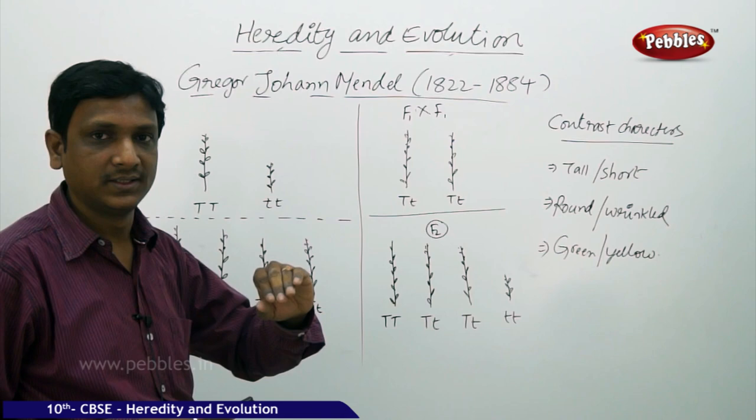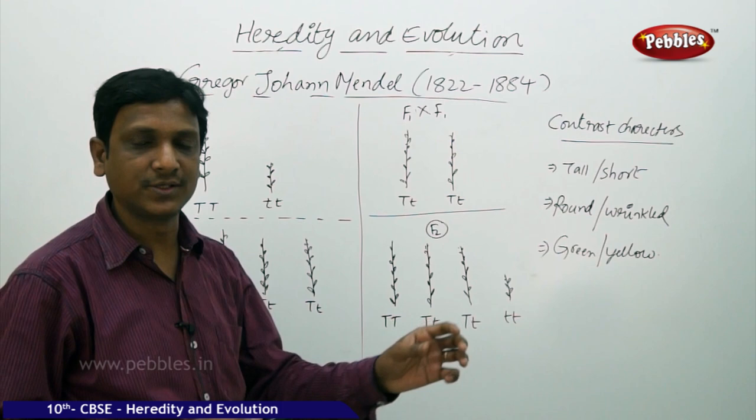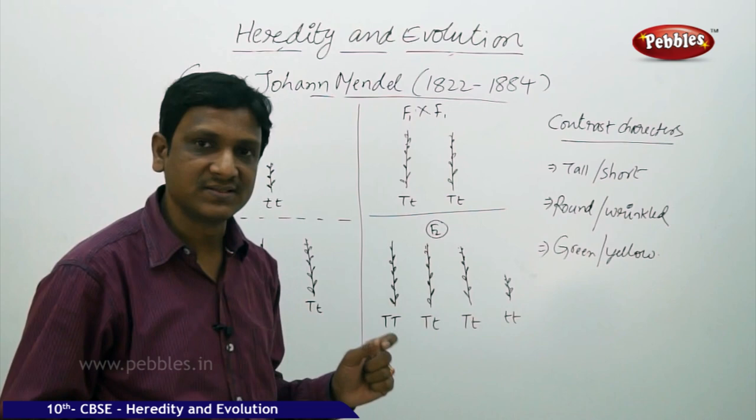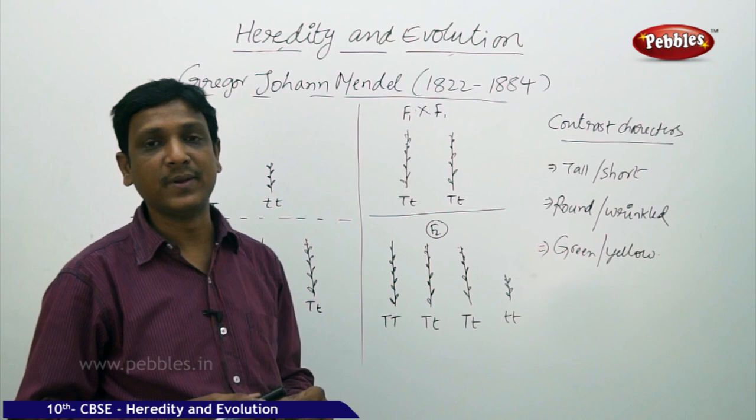Such observable characters are called contrasting characters. In pea plants, there are contrasting characters like tallness and shortness. Some pea plants are tall, some are short. Some have round seeds, some have wrinkled seeds. Some have green seeds, some have yellow seeds, some have white flowers, some have violet flowers. These many variations are there in pea plants, which is why Mendel selected them for his experiment.